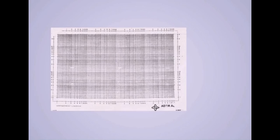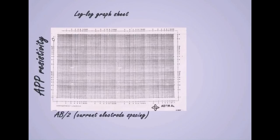Place your log-log graph sheet on the table. And before you continue, I would like to tell you that the vertical axis for your log-log sheet stands for the apparent resistivity, while the horizontal axis serves as the current electrospacing, which is AB over 2.